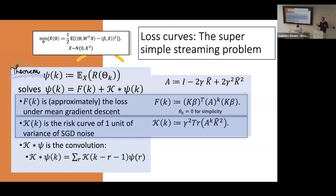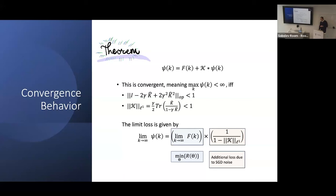Is there anything you can do with this formula? One easy thing you can do right away is describe exactly when this is convergent — convergent in the sense that the loss curve is bounded. You can really write down an if-and-only-if condition for convergence. This is nice if you really want to understand large step sizes, as you approach the stability threshold. There are two things that need to happen: you need some operator norm less than one, and a second condition — a second-moment condition — where this noise term also has to be less than one.